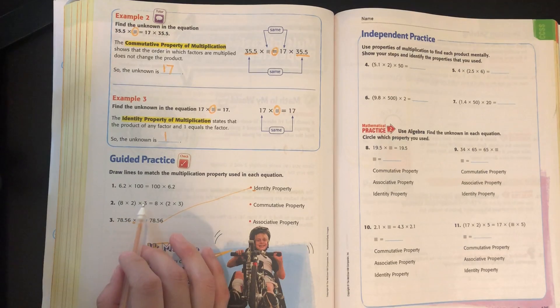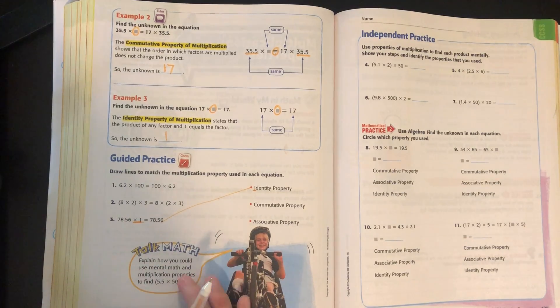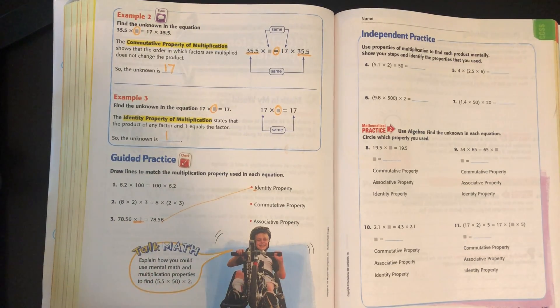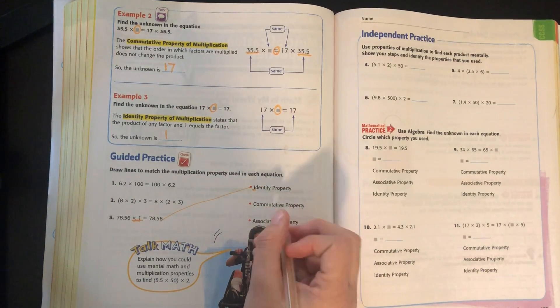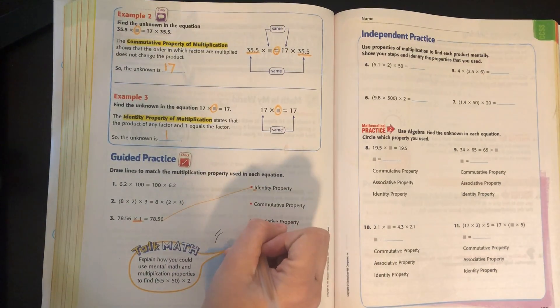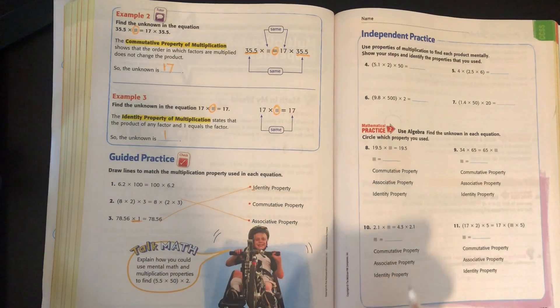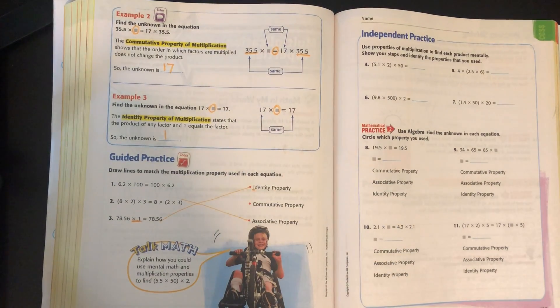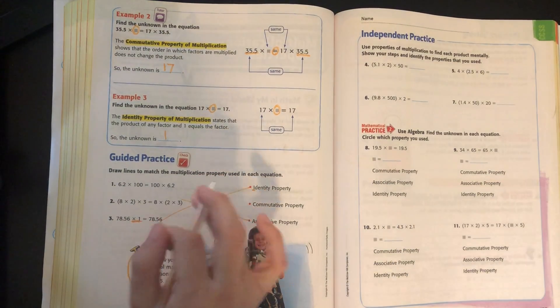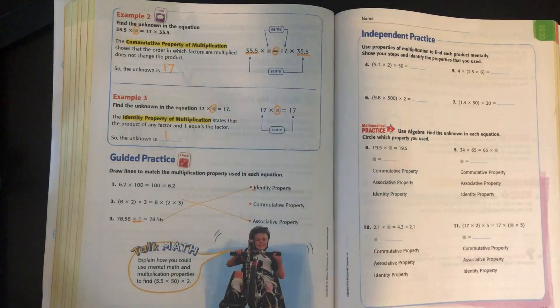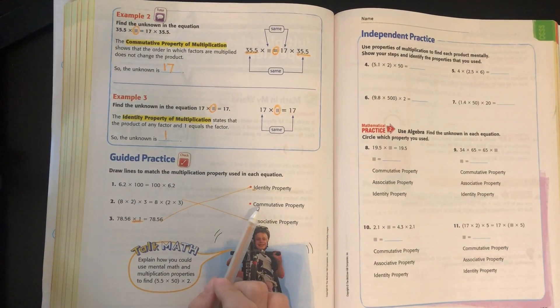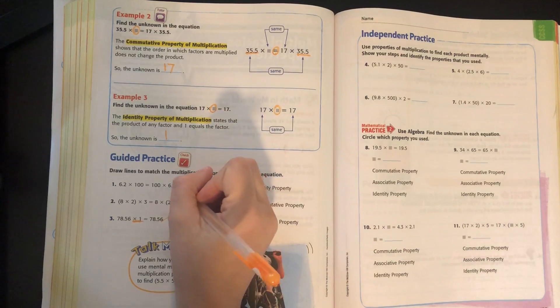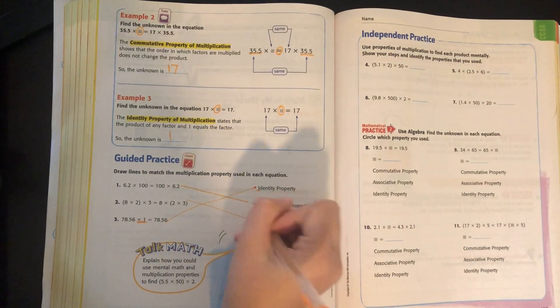Next, I can look at number 2, and I see grouping symbols. When I see grouping symbols, I think association or associative, which tells me this has to be the associative property. Remember, associative property generally is going to use grouping symbols, like parentheses and brackets. So that means commutative property has to match for number 1.